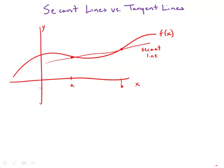Now, finding the slope of a secant line is relatively easy. The slope of a secant line would just be the change in y, f of b minus f of a, over the change in x, b minus a.